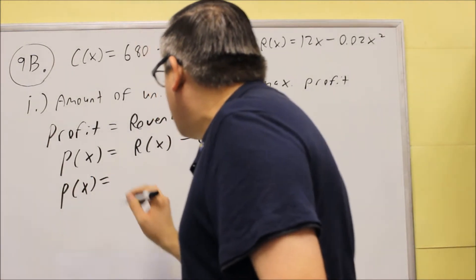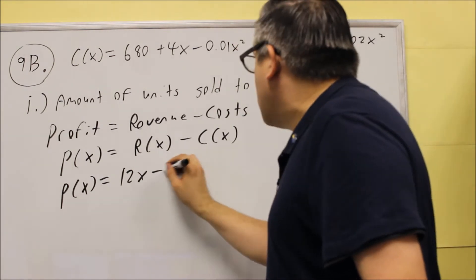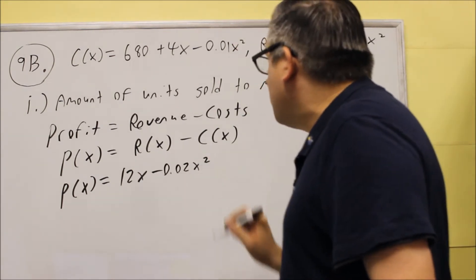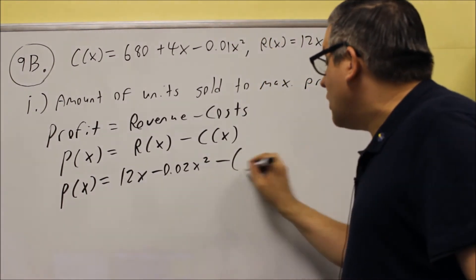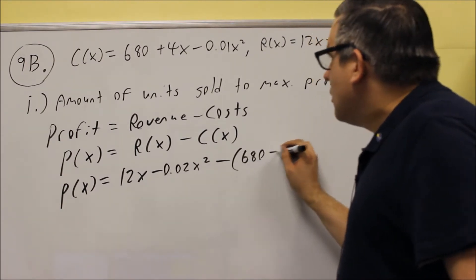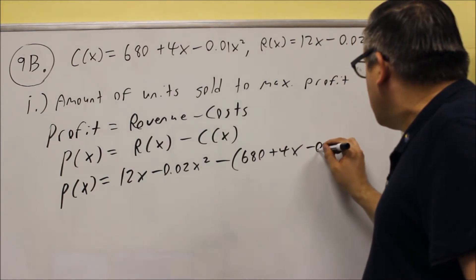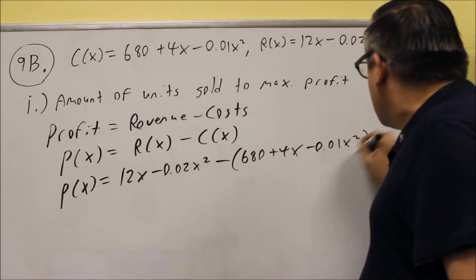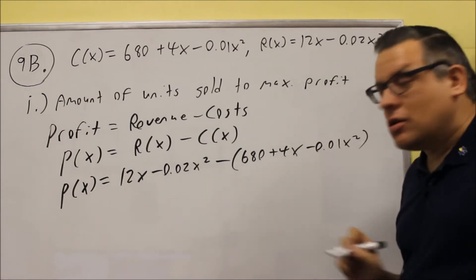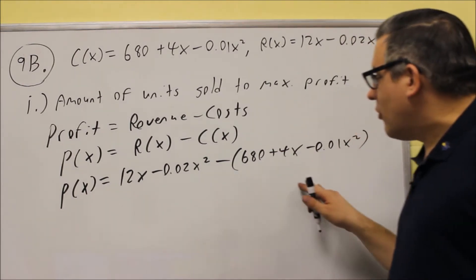So for this profit, you're going to do P(x) is equal to revenue minus the cost. Your revenue is 12x minus 0.02x squared. We're subtracting the entire cost function, 680 plus 4x minus 0.01x squared. So all that's going to have to go inside the parentheses.